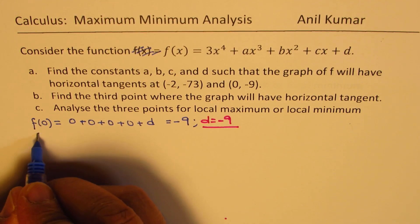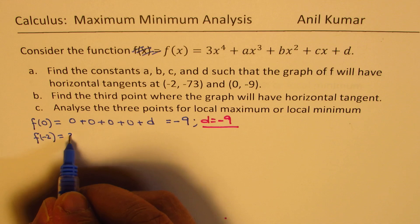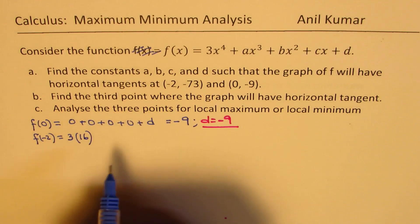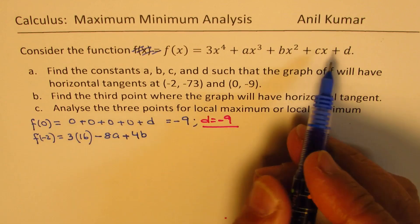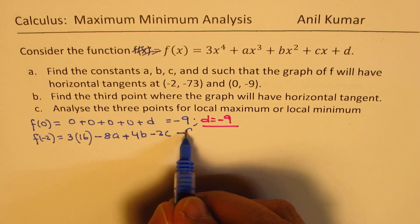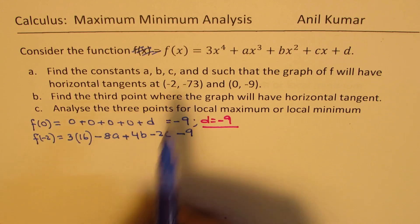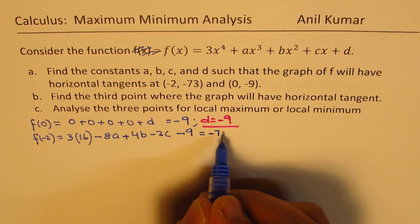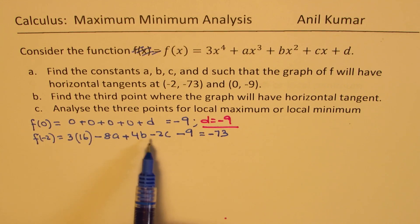Now let's substitute x = -2. So f(-2) will be: (-2)⁴ is positive, giving 3 × 16; then minus 8a; then 4b is positive; then -2c is negative; and since d is -9, we write minus 9. We know f(-2) = -73, so all of this equals -73.